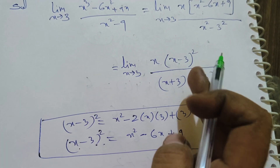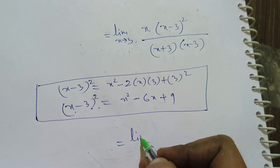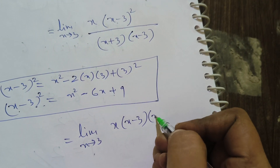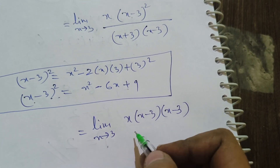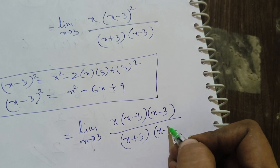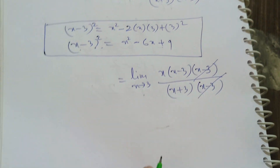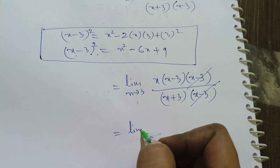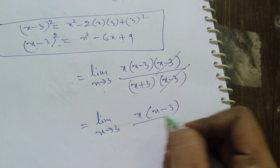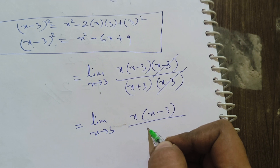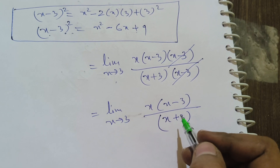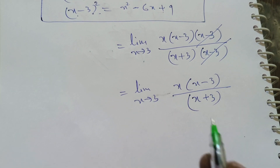Now the expression becomes: limit x tends to 3 of x·(x-3)·(x-3) / [(x+3)·(x-3)]. We split (x-3)² as (x-3)·(x-3), and the common (x-3) factor in the numerator and denominator cancels, leaving limit x tends to 3 of x(x-3) / (x+3).